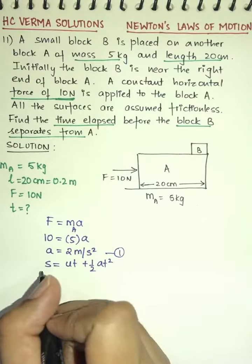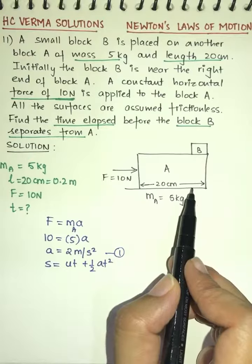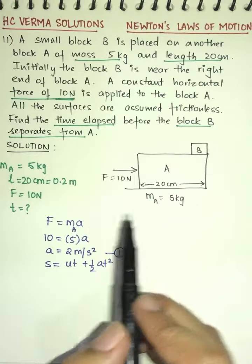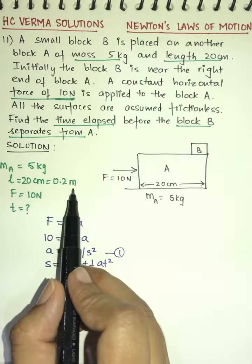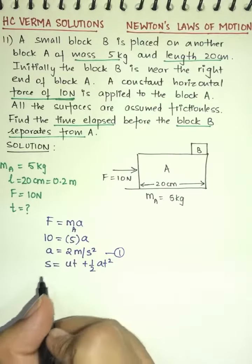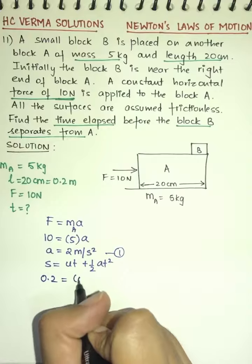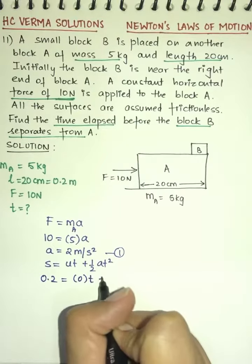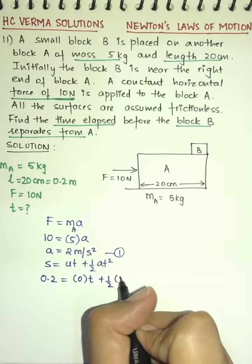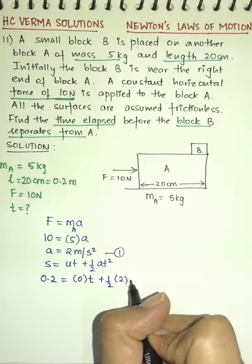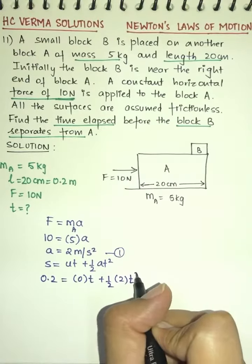The displacement of the block equals the length of the block, which is 20 cm. Converting to SI units, s = 0.2 m, u = 0. The acceleration is 2 m/s² from equation 1, and time is unknown.